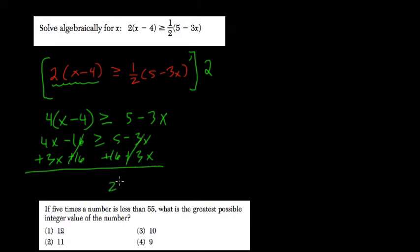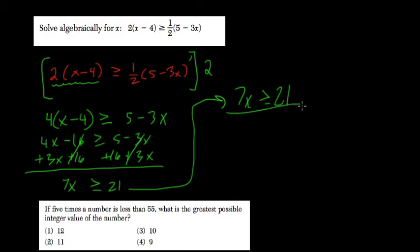16 and 5 is 21, and then we get 4x and 3x is 7x. We have 7x greater than or equal to 21. Divide everything by 7, x is greater than or equal to 3.